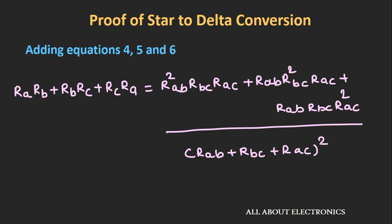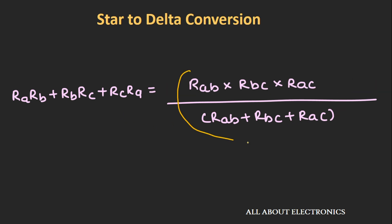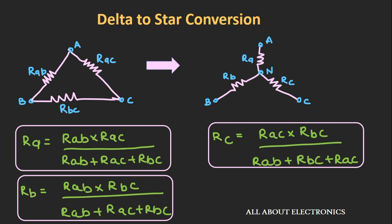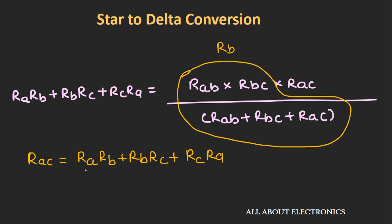Pause the video and look at this expression carefully. On the right-hand side numerator, the product Rab·Rbc·Rac is common in all three terms — factor it out. After simplification, one term is recognizable as the value of Rb, since Rb equals Rab·Rbc divided by (Rab + Rac + Rbc). Replacing that term with Rb and rearranging, we get: Rac = (Ra·Rb + Rb·Rc + Rc·Ra) divided by Rb.